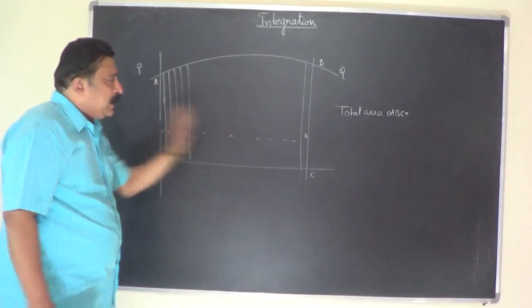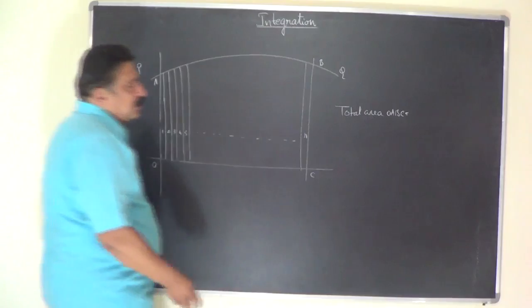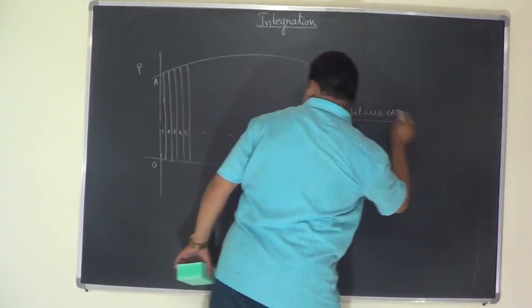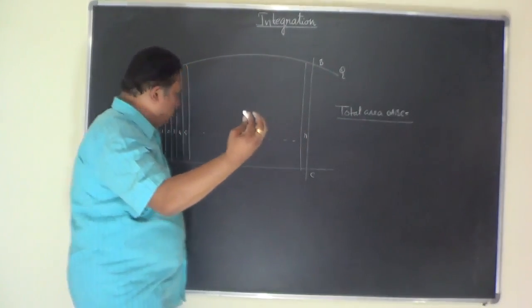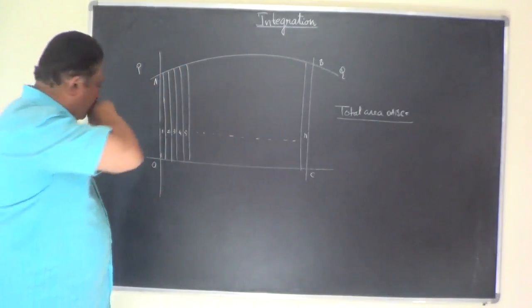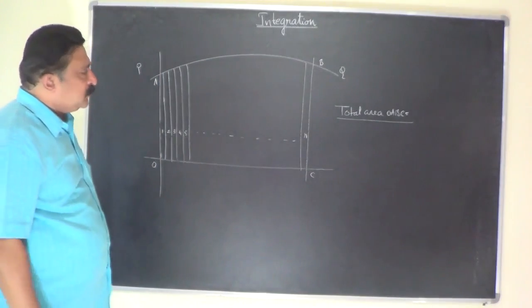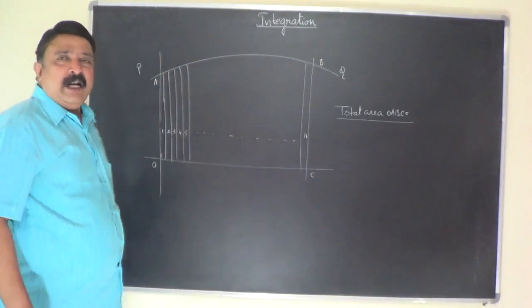What happens when you add up all these rectangles? Then I get total area. That means the area of all these rectangles get integrated. They get summed up together. So you will get the total area.